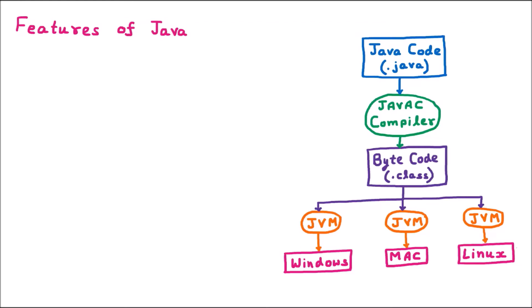Okay everyone, now we are learning the features of Java. If we talk about the features of Java, the first feature is that Java is a compiled and interpreted language.